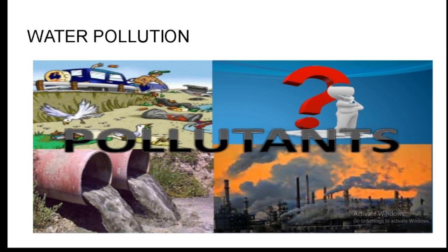Water pollution is the contamination of water by foreign substances or agents which alter its quality and characteristics. The major reason for water pollution is human activity. The major sources of water pollution include domestic waste from urban and rural areas, industrial effluents, and agricultural runoff water, which are discharged into our natural water bodies like rivers, lakes, ponds, etc.